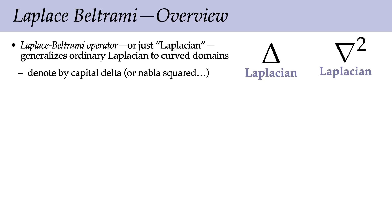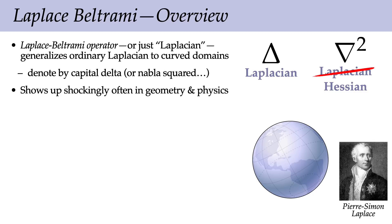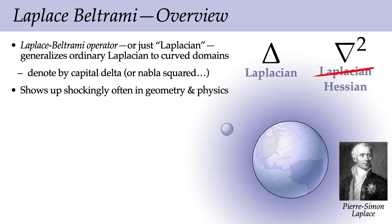You might also see in other places, especially in physics, some people like to write the Laplacian as nabla squared, but we're going to reserve that symbol for the Hessian, a different operator that has an important relationship to the Laplacian. The Laplacian shows up all over the place in geometry and physics. It was originally studied by Pierre-Simon Laplace, who was trying to understand the force of gravity—for instance, the force that the Earth exhibits on other bodies in the solar system.